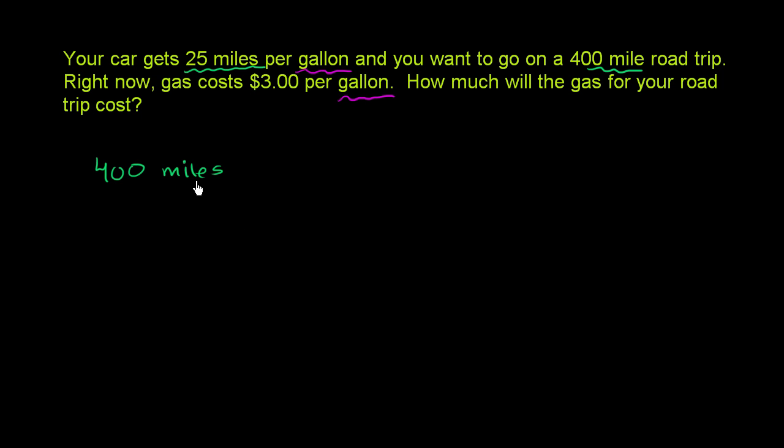So to figure out the number of gallons, would I want to multiply 400 miles times the miles per gallon, which is 25? Or would I want to multiply by the gallons per mile? If I multiply by the gallons per mile, and I multiply that times 400, then I would get the number of gallons. So let's just think about that. I want to multiply that times, and I'll write the units first, the gallons per mile.